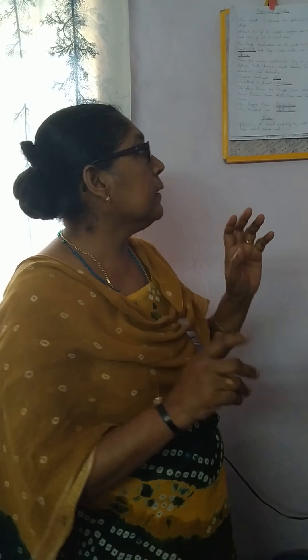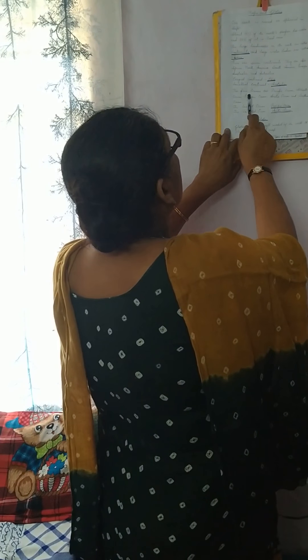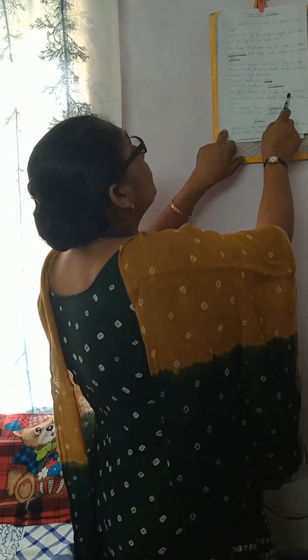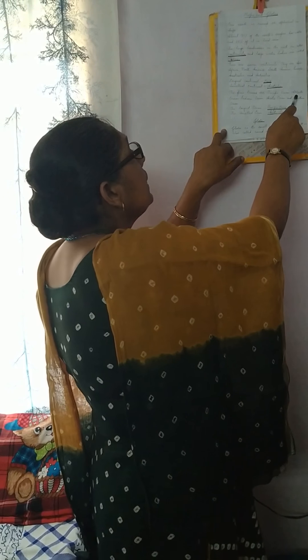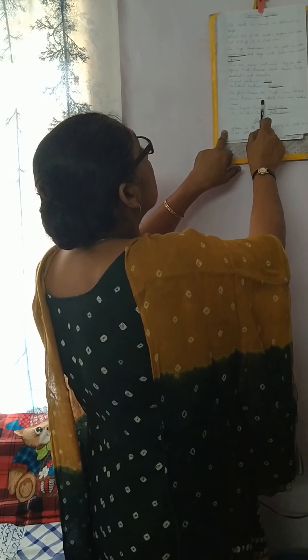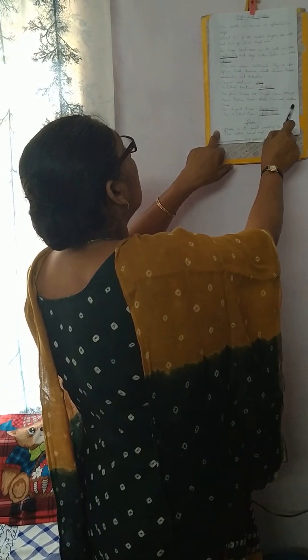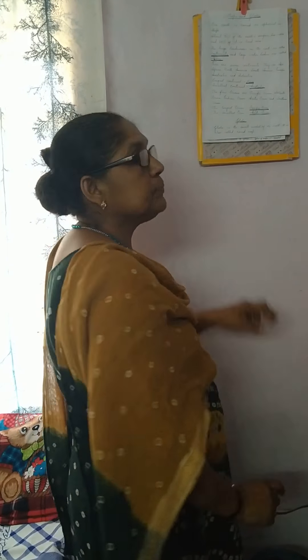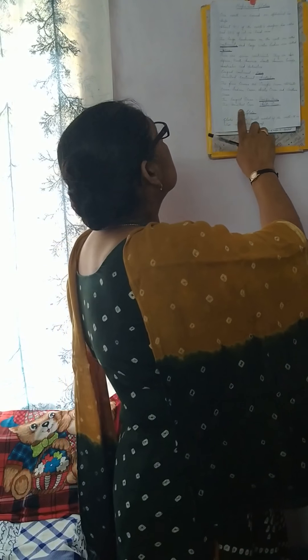The five oceans are the Pacific Ocean, Atlantic Ocean, Indian Ocean, Arctic Ocean, and Southern Ocean. The largest ocean is the Pacific Ocean, and the smallest ocean is the Arctic Ocean.